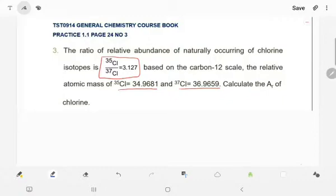We have the ratio in the question Cl-35 over Cl-37 which is equal to 3.127. And in this question, you are also given the relative atomic mass of Cl-35 which is 34.9681 and Cl-37 is 36.9659.